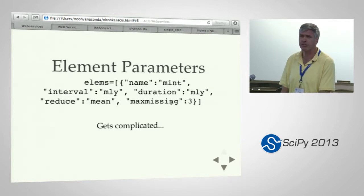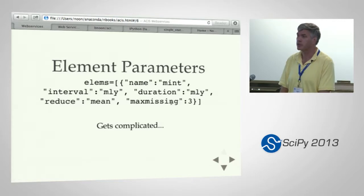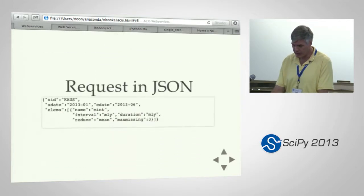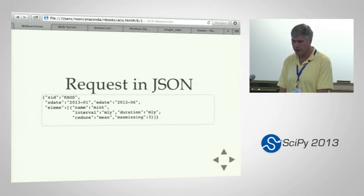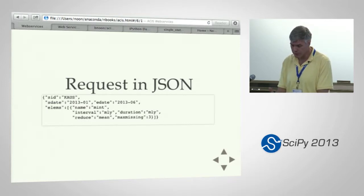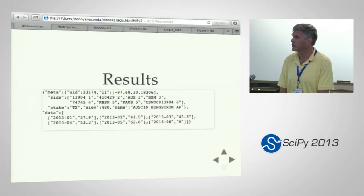Other parameters include max missing, and you can specify the units — the default is English units, but you can specify metric. Here's a formatted JSON request: we're looking for monthly mean minimum temperature for Austin for a six-month series this year. And here are the results — it's a standard single station, fairly easy. You get a fair amount of metadata and a UID, which is a unique identifier we use internally to keep stations that are climatologically coherent together.